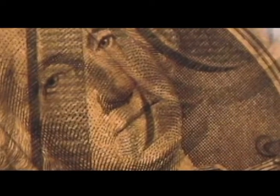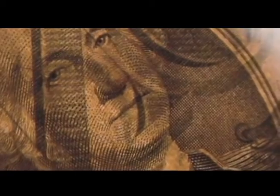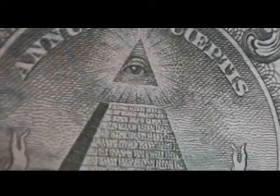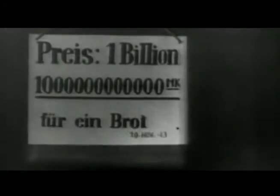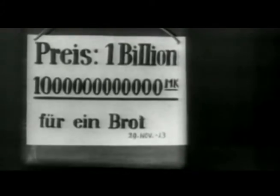When the money supply is inflated, it becomes watered down or diluted. Just like stock — when a corporation authorizes and issues more stock, existing shareholders are diluted. When money is diluted, it has less purchasing power. When it has less purchasing power, prices rise because it takes more Federal Reserve notes to purchase a given product. When prices rise, it has the effect of a tax. Inflation is, therefore, a hidden tax.